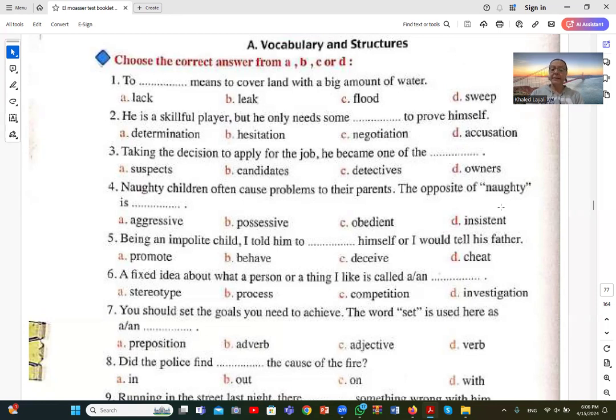Number five: Being an impolite child, I told him to behave himself. To behave means to act in a proper and polite manner. Number six: A fixed idea about what a person or a thing is like is called a stereotype. A stereotype is a fixed mental image that doesn't change about a person or thing.